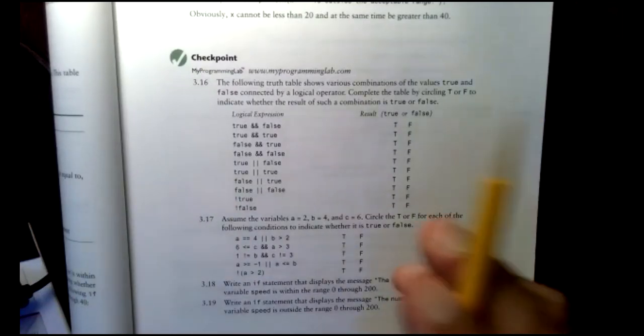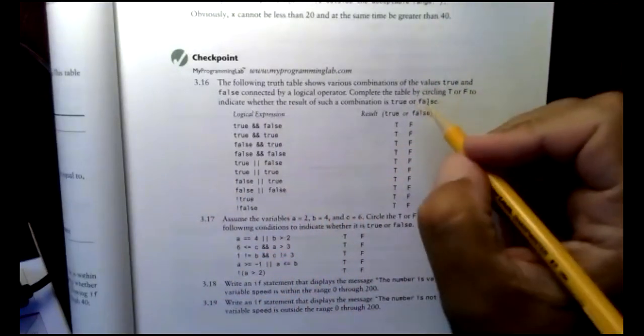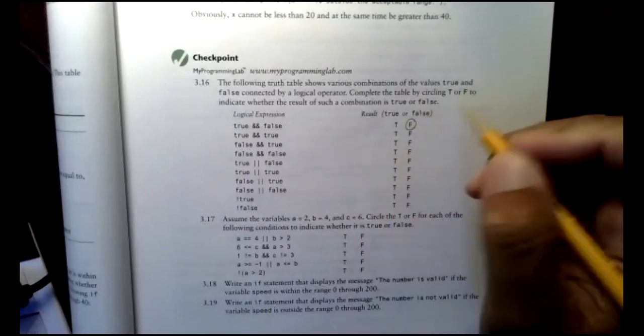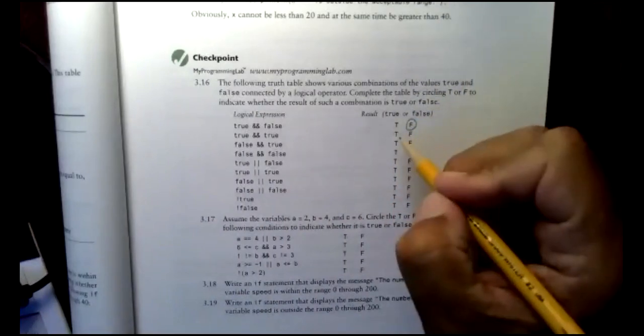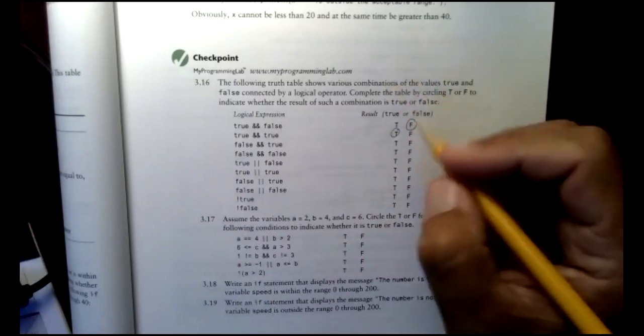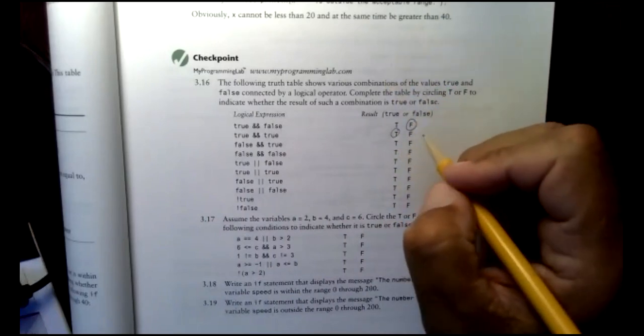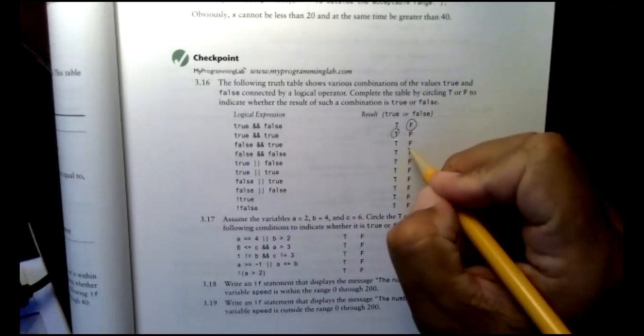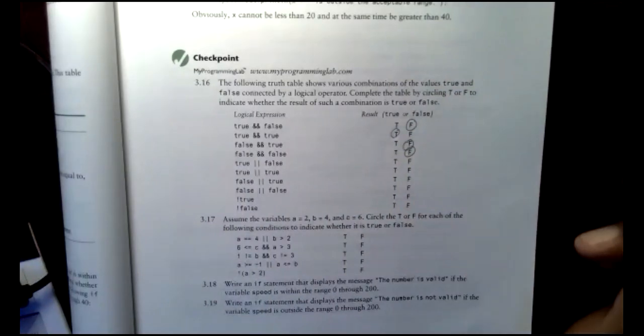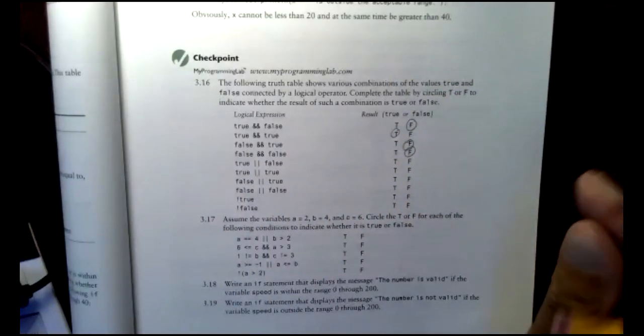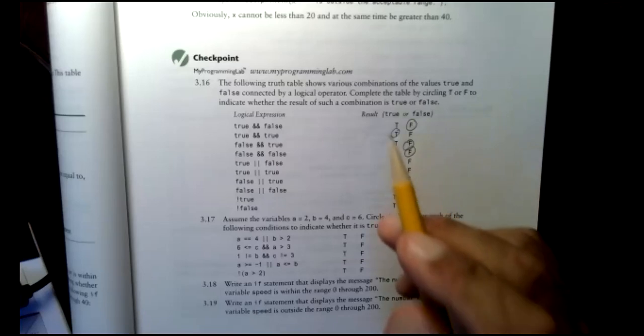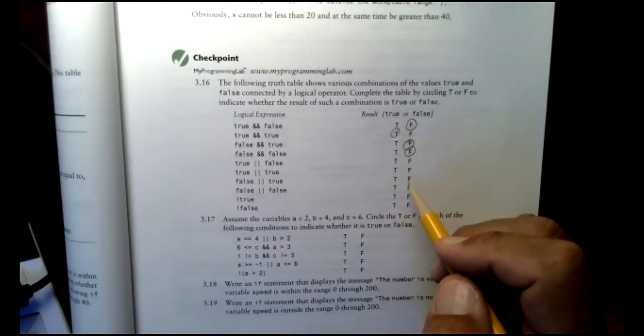All right. Not looking at the table. We're going to do these in our head. True anded with false. False. Good. True anded with true. True. True. And I'm going to go back and I'm going to say, okay, and is true only when both of them are true. So the next one, when I see false anded with true, I know that's going to be false. And false anded with false, that's going to be false. So this checkpoint 3.16 would be the same kind of thing as the truth tables we just drew up. The next four deal with ors.